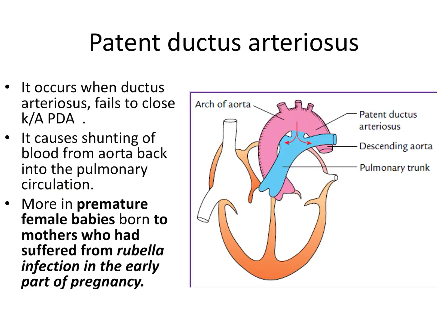If the ductus arteriosus persists after birth, blood flows from the arch of aorta to the pulmonary trunk because the pressure in the aorta is higher than in the pulmonary trunk. This leads to decreased cardiac output, causing dyspnea. Pregnant females with rubella who give birth to premature female babies have increased chances of patent ductus arteriosus.